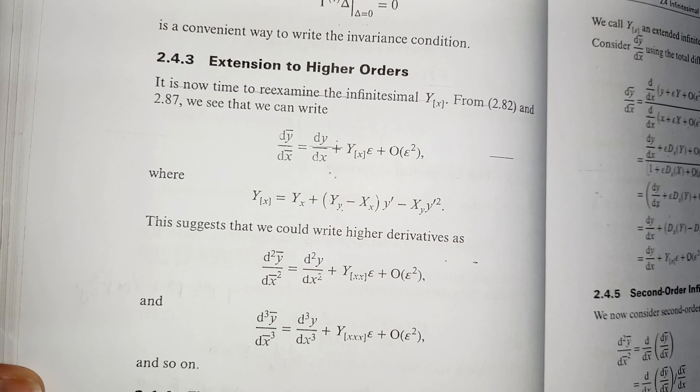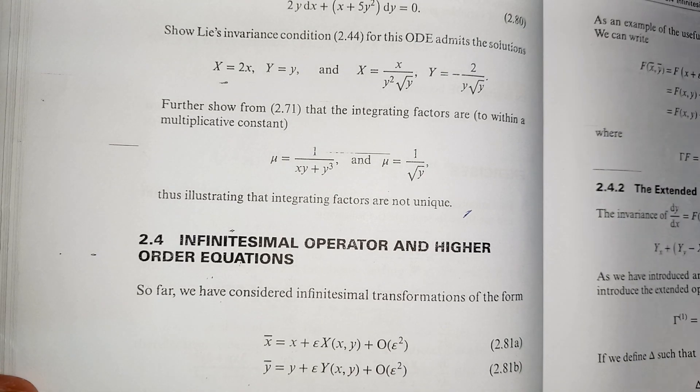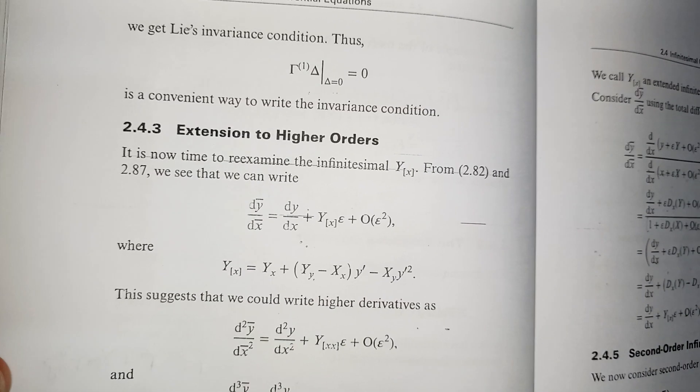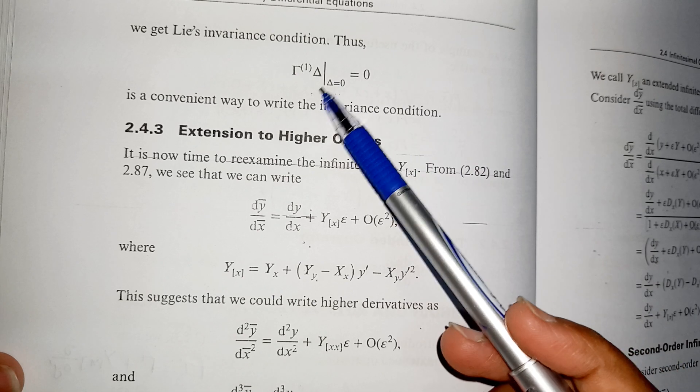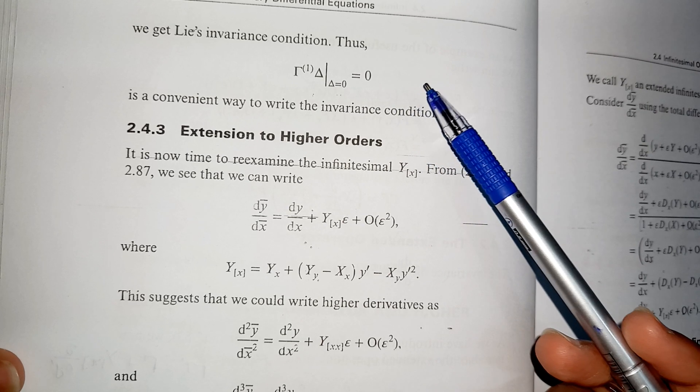In the previous lecture, we have discussed about the infinitesimal operator and higher order equations and we have also derived the Lie invariance condition that is given as gamma 1 of delta at delta is equal to 0 for the first order linear ordinary differential equation.